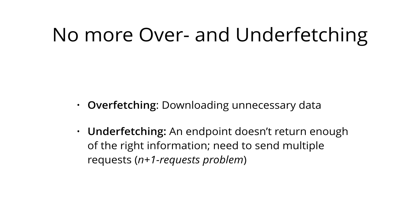The problem of under-fetching, on the other hand, means that a specific endpoint doesn't return enough of the right information, so we have to send multiple requests. This can escalate into the N+1 requests problem, which means we have a list of items fetched from the server, but for each of those items we need more information from a dedicated endpoint — requiring one additional request per item downloaded initially.